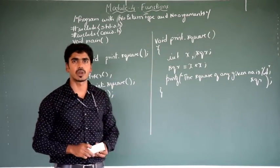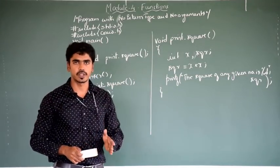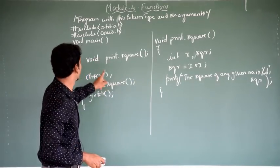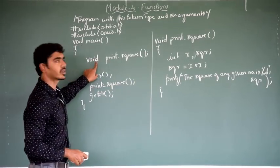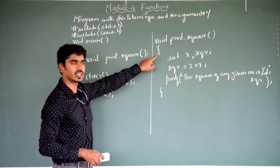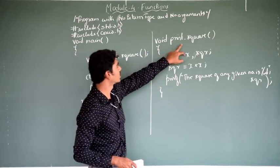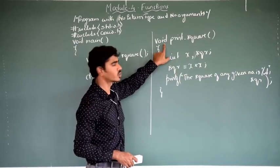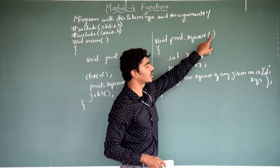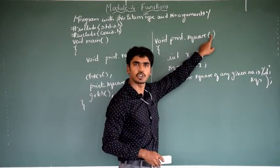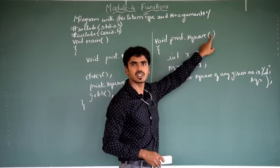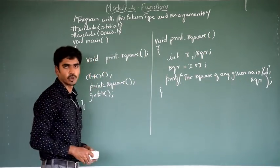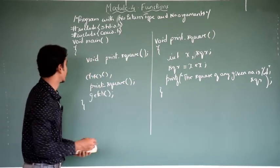This example program demonstrates the first category of user-defined functions — a program with no return type and no arguments. The function definition is returning nothing, so it is void, and it is accepting nothing, so there are no arguments within the function definition. Let us see how this program is going to execute.